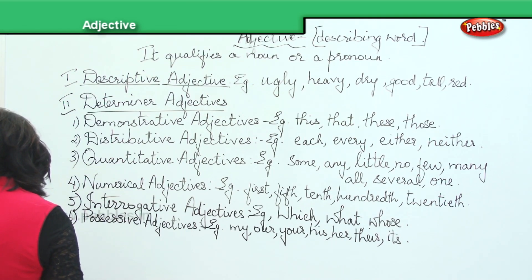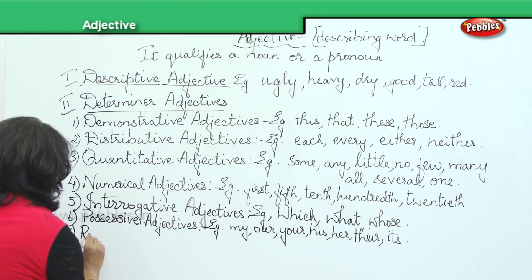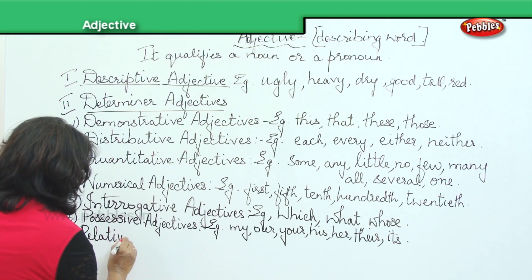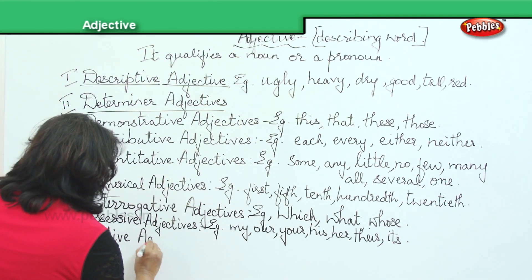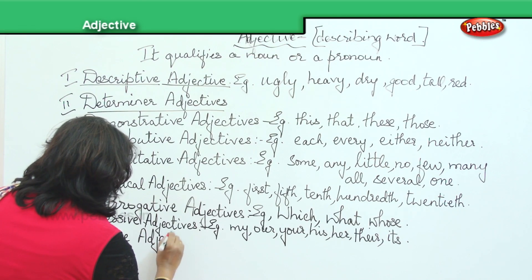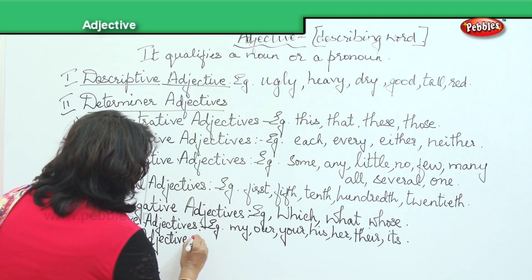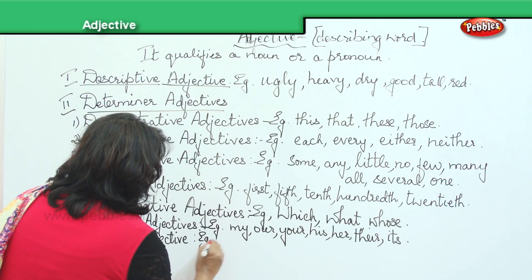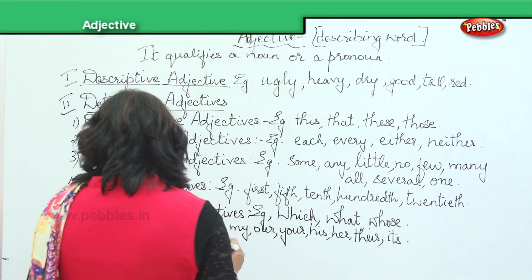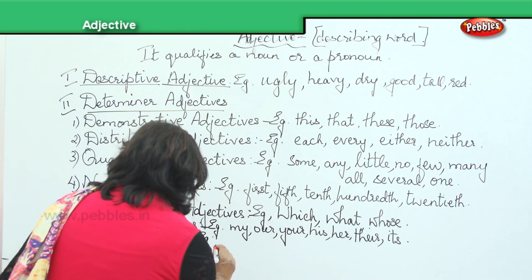Next: relative adjectives. Just like relative pronouns, relative adjectives are: who, which, and that.